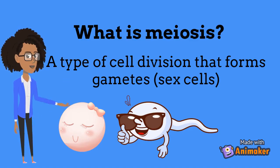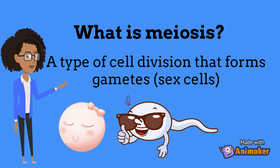Meiosis, in a nutshell, is a type of cell division in germ cells that is used to create gametes, also known as sperm and egg cells. Germline cells are the term that describes all of the cells in the body that are involved in reproduction. They are able to divide by meiosis, which then allows them to pass on genetic information.